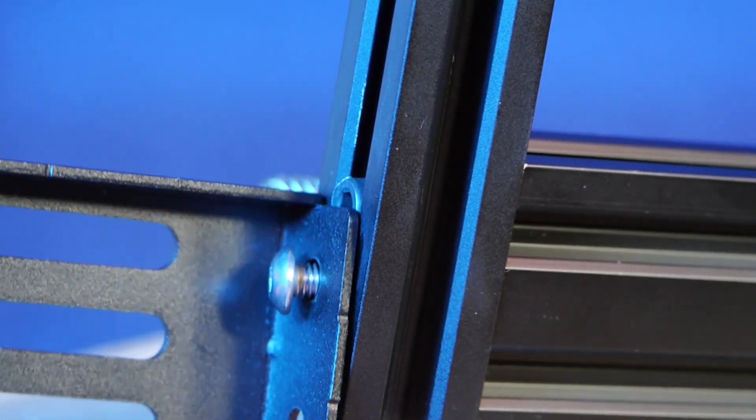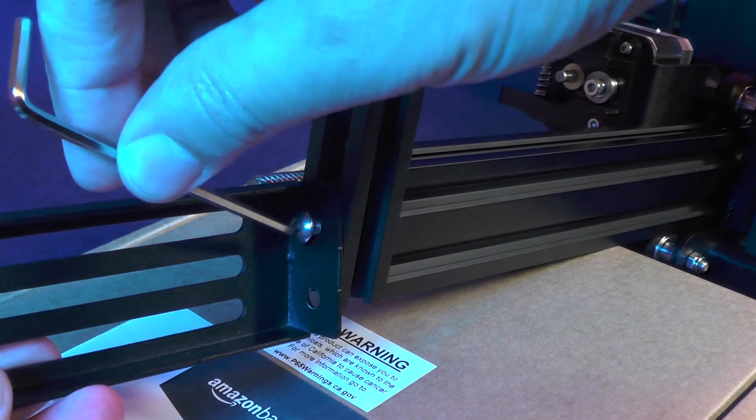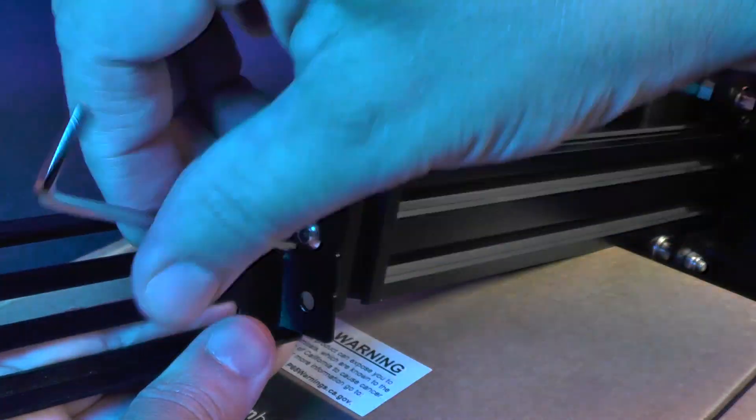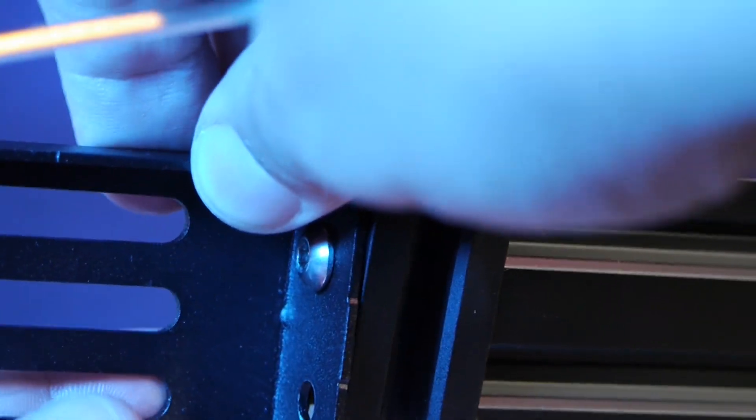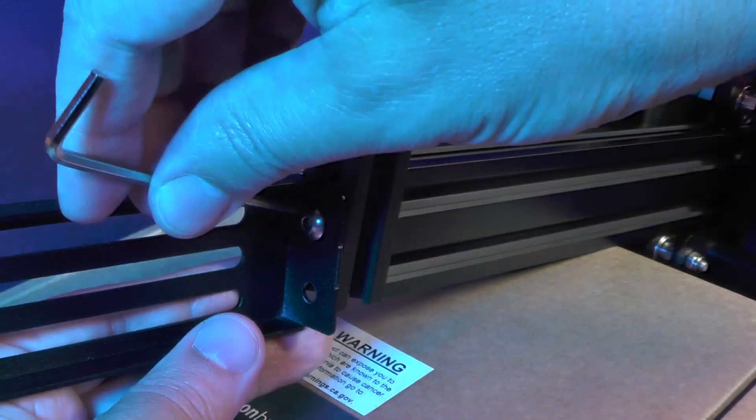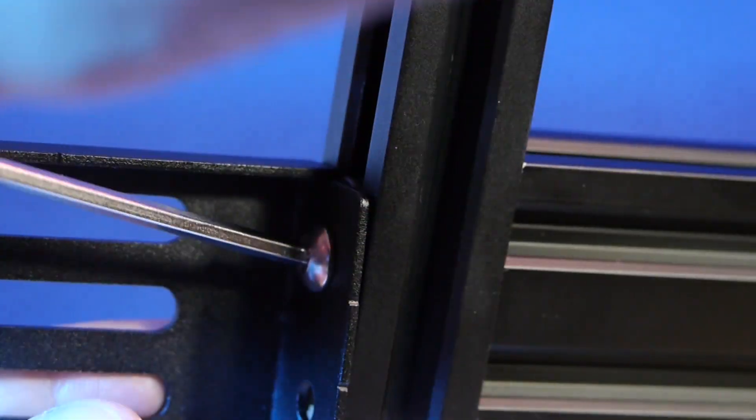If you try to turn the screw and convince the T nut to turn sideways while the printer was standing up, you would have such a hard time that you might end up throwing the towel. Don't tighten the screw too much right now.